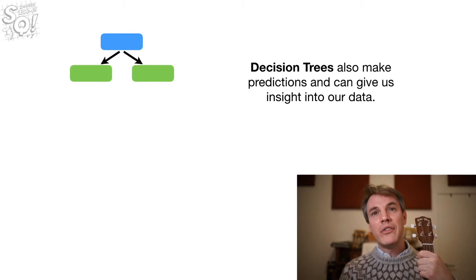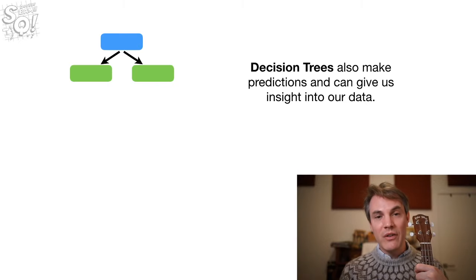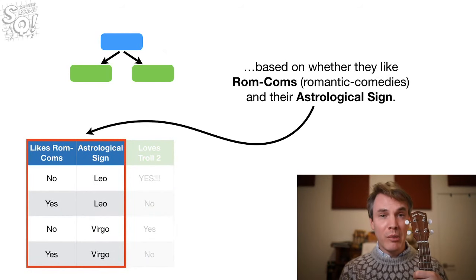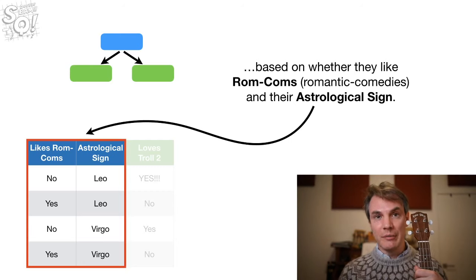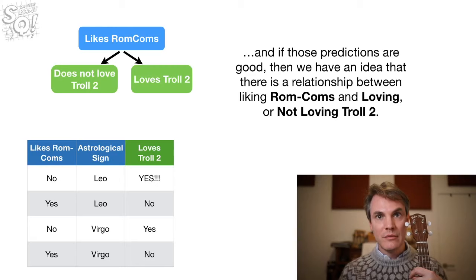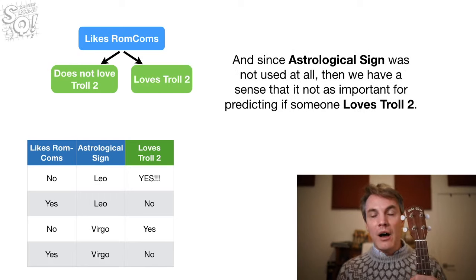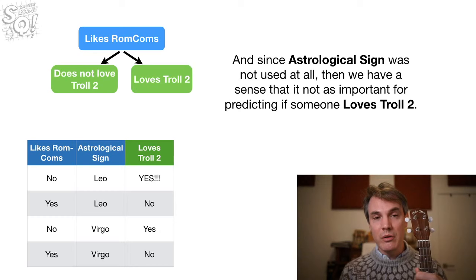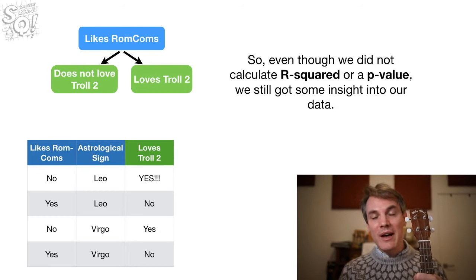Interestingly enough, decision trees can also make predictions and give us insight into our data. For example, this tree predicts whether or not someone will love the movie Troll 2, based on whether they like rom-coms, romantic comedies, and their astrological sign. However, the actual tree only uses likes rom-coms to make predictions. And if those predictions are good, then we have an idea that there's a relationship between rom-coms and loving or not loving Troll 2. And since astrological sign was not used at all, then we have some sense that it's not as important for predicting if someone loves Troll 2.